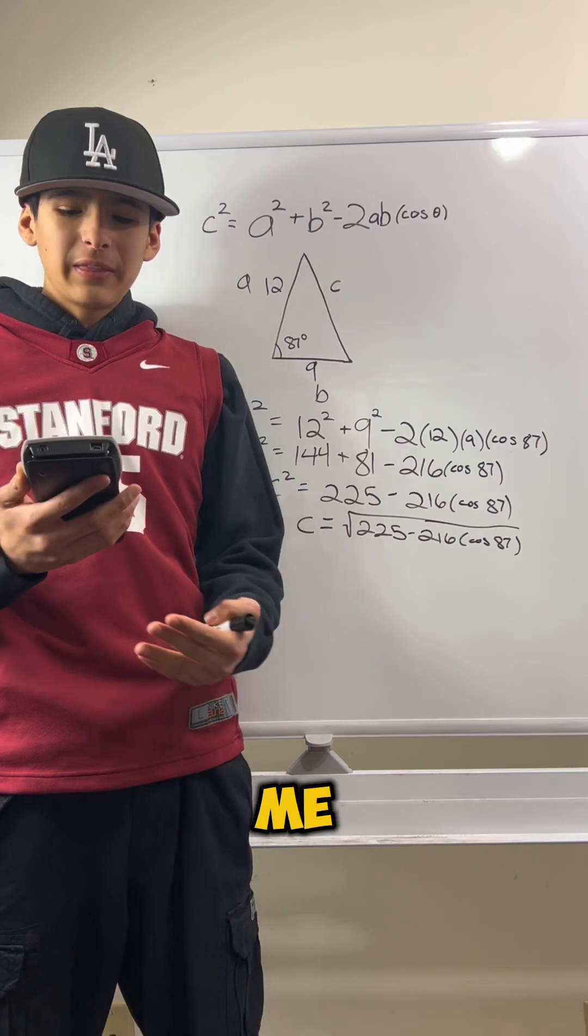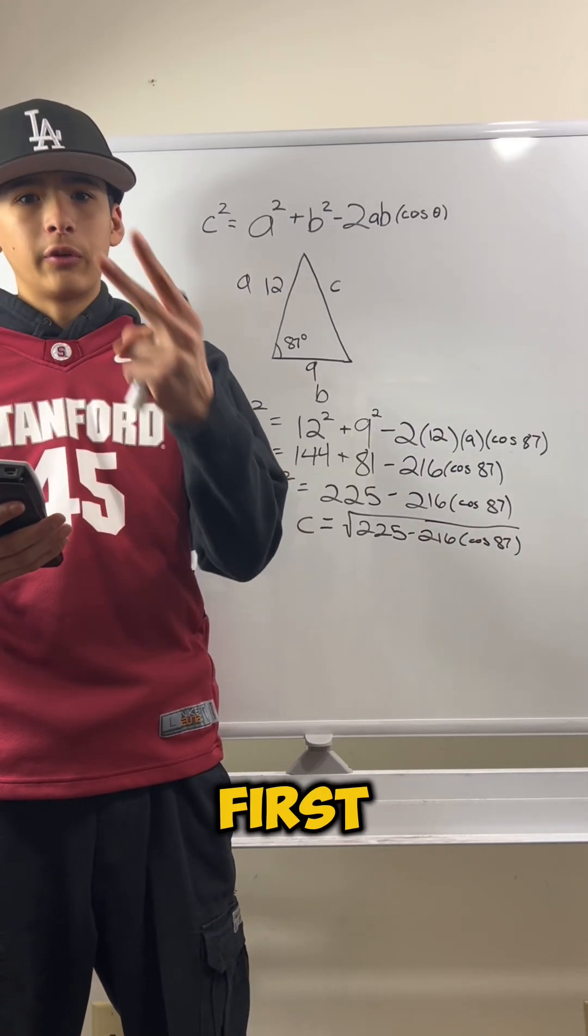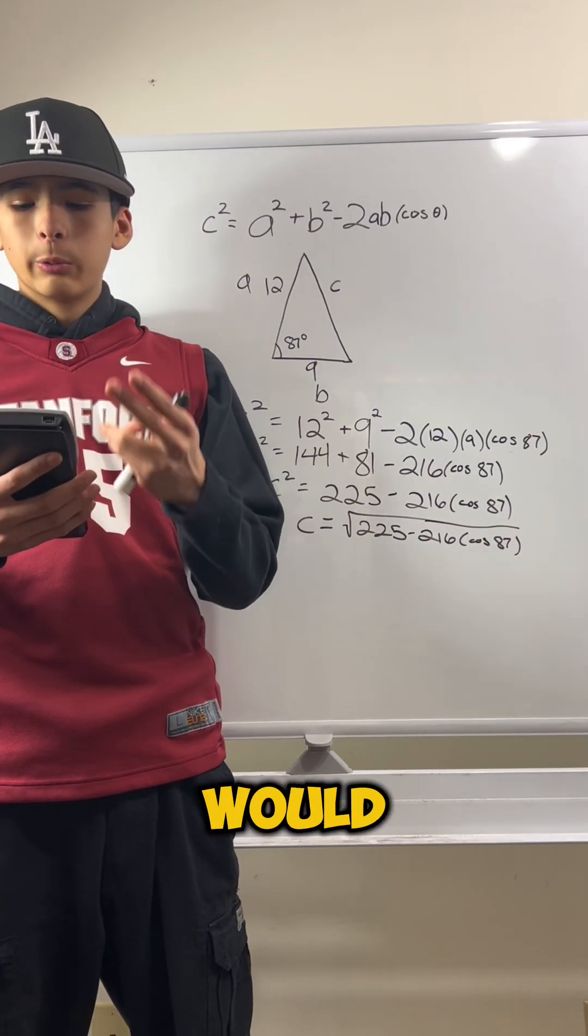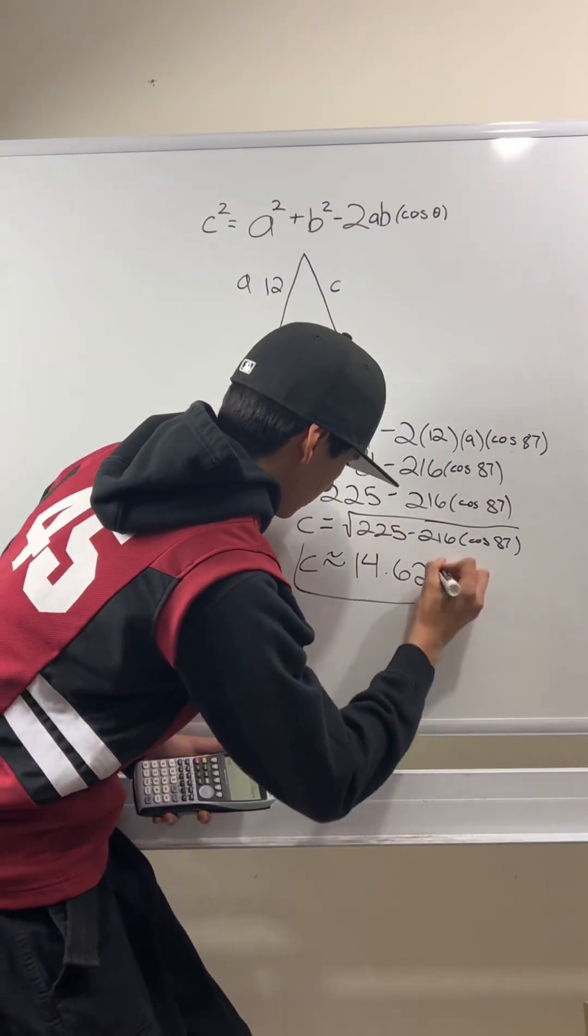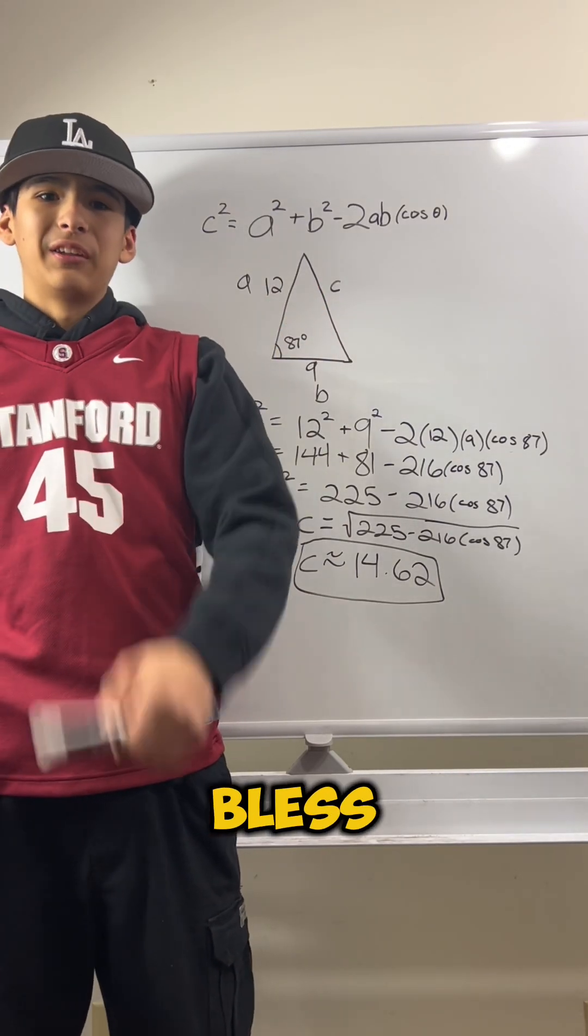So my calculator is telling me that it's 14.61832526, but we don't need all those digits. We just need the first two digits. So it would round up to 14.62. And that is the length for side C. God bless.